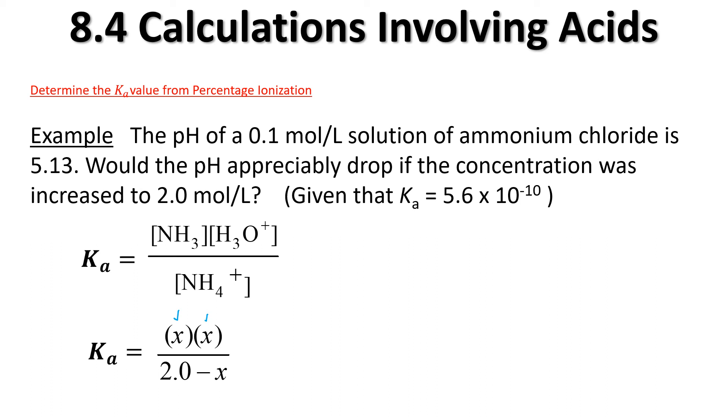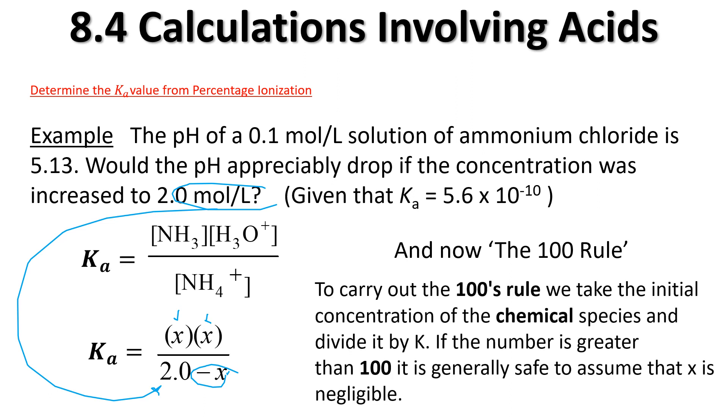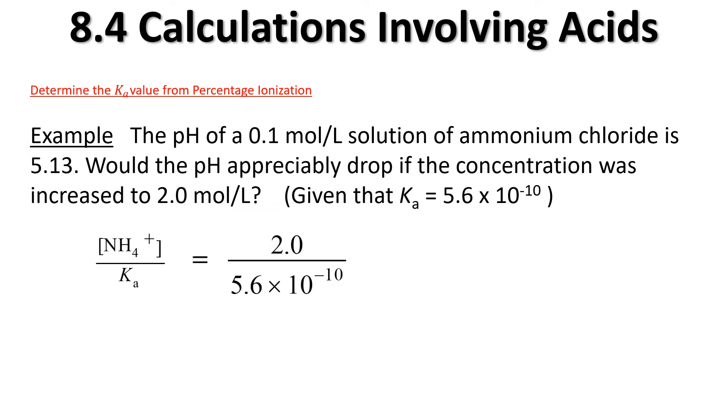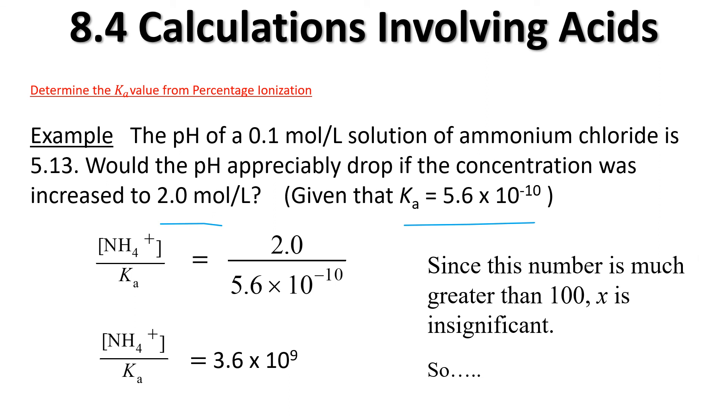Now we want to talk about something called the 100 rule. This minus x is causing us a bit of a headache. It's going to cause us to have a quadratic and a lot more math. To carry out the 100s rule, we take the initial concentration of the chemical species and divide it by Ka. If the number is greater than 100, it's generally safe to assume that x is negligible. Let's see if we can determine if it's greater than 100. We take our 2.0 and divide by the Ka. And we get a gigantic number. Since this number is much larger than 100, the x is insignificant.